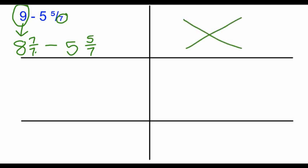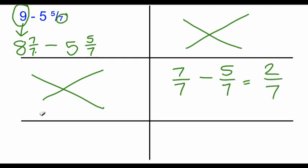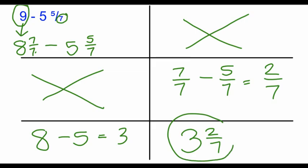We can skip this step because we already have common denominators. We're just going to, in this box, subtract 7 sevenths minus 5 sevenths, which is going to be 2 sevenths. In this box, we're subtracting our whole numbers, 8 minus 5. 8 minus 5 is 3. Then, in our final box, we're going to piece together our whole number and our fraction. 3 and 2 sevenths is the final answer.